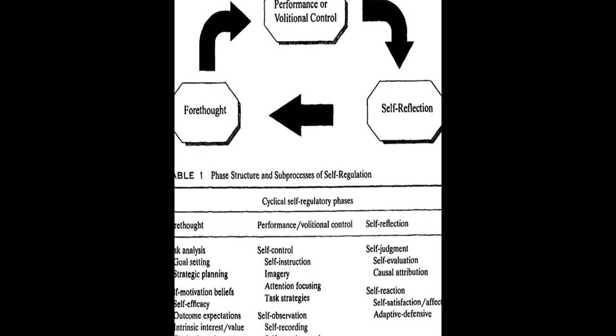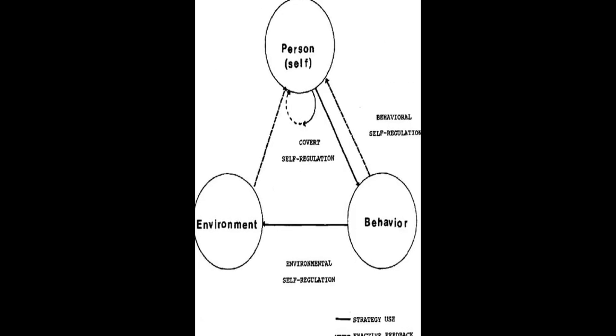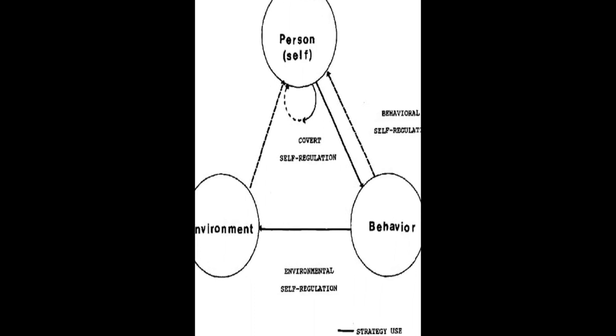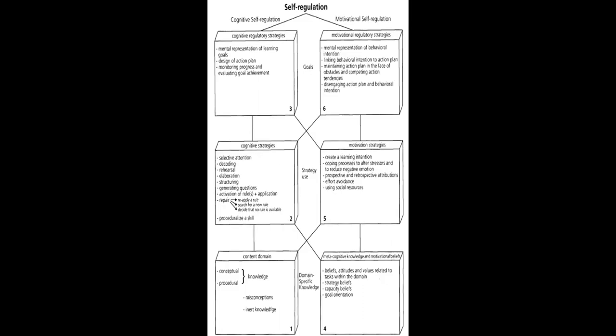The models are then compared in terms of phases and subprocesses, how they conceptualize metacognition, motivation, and emotion, top-down/bottom-up, automaticity, and context.